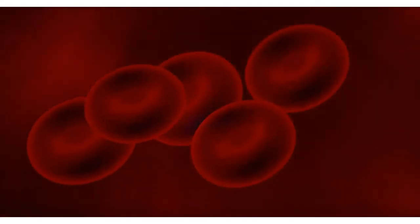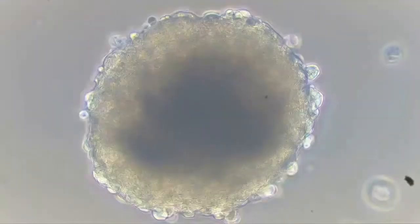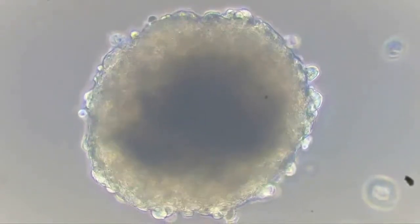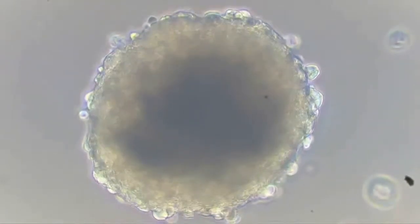During mitosis, cells build a molecular machine known as the mitotic spindle. The mitotic spindle is composed of filaments called microtubules that grow and shrink. The microtubules connect to the chromosomes and organize them in such a way that they all line up in the middle of the cell.